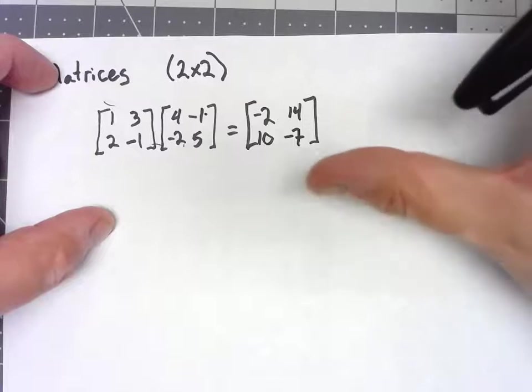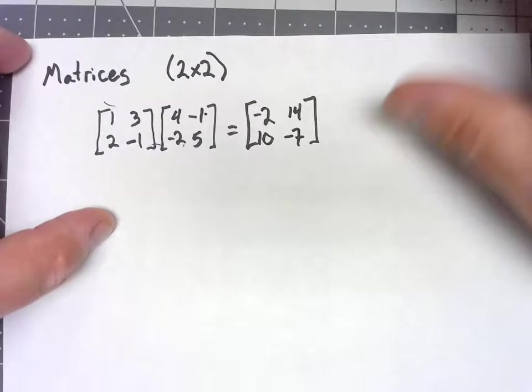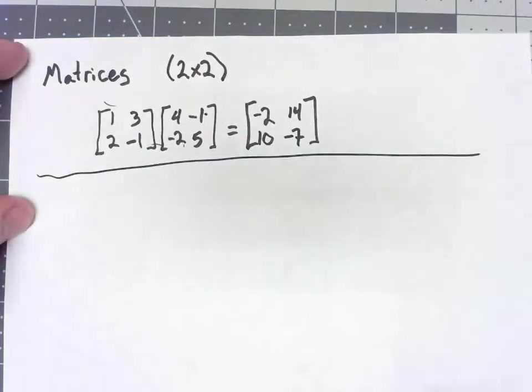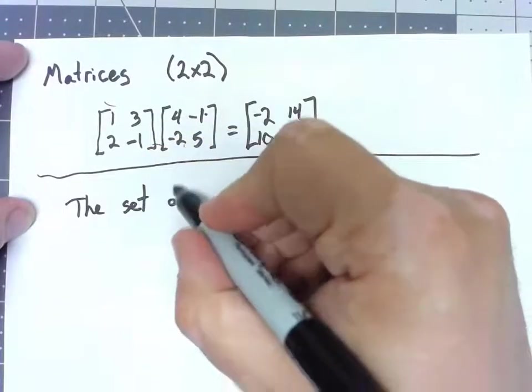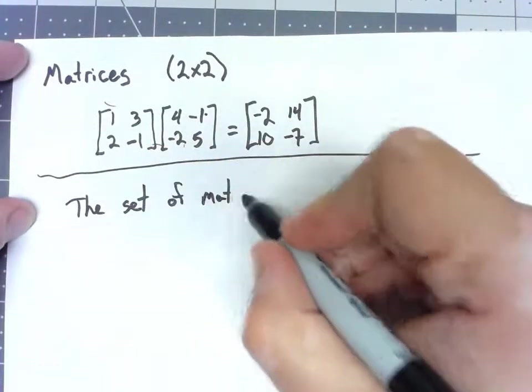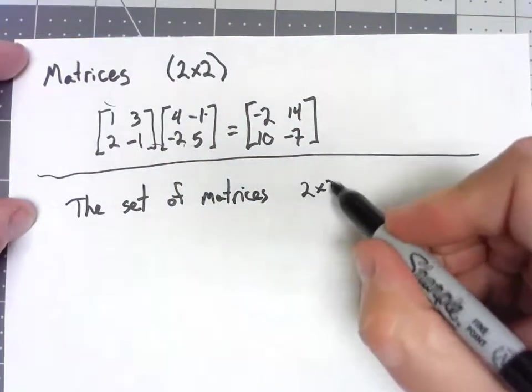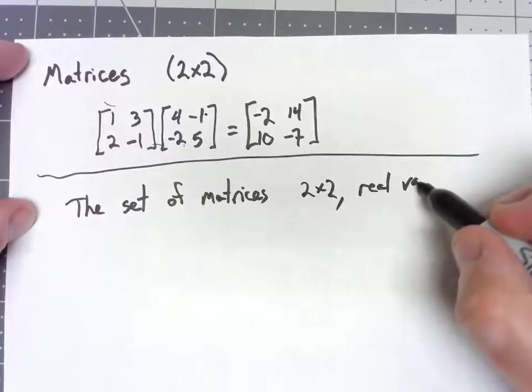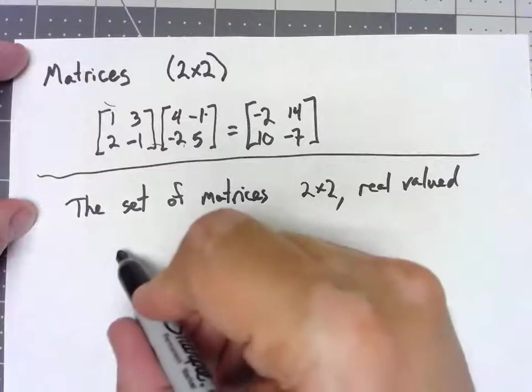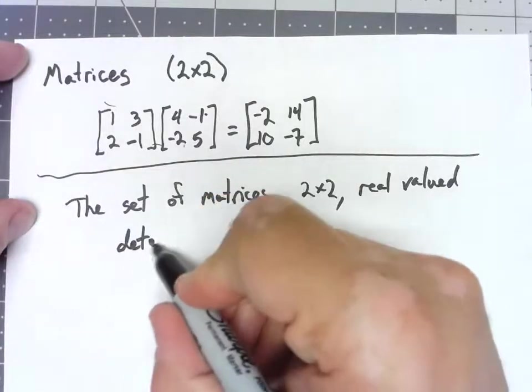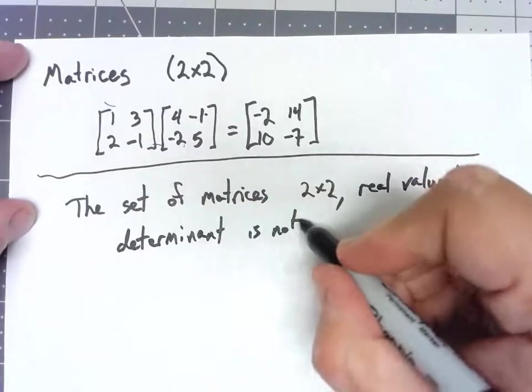Hopefully you remember how that works. Now I'm going to be doing some stuff with these matrices, but specifically, I want to look at the set of matrices, 2 by 2 real valued, but put on the restriction that the determinant is not zero.